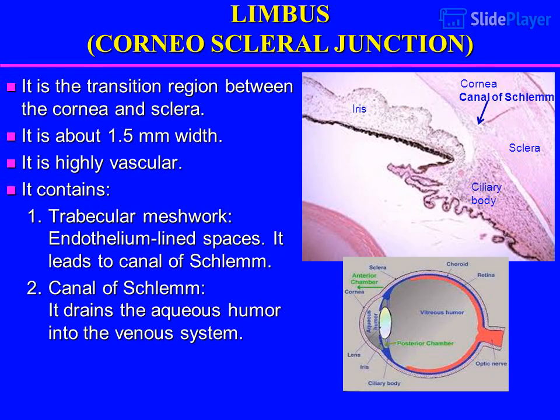Limbus — corneoscleral junction: it is the transition region between the cornea and sclera, about 1.5 mm in width. It is highly vascular and contains the trabecular meshwork with endothelium-lined spaces. These lead to the Canal of Schlemm, which drains the aqueous humor into the venous system.